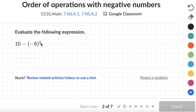Okay, here we have an exponent, so we will go ahead and do that first. So, negative 9 squared, that's negative 9 times negative 9, and a negative times a negative is positive. So this will equal 10 minus 81.